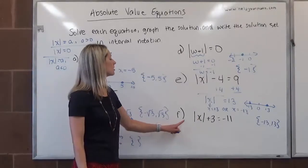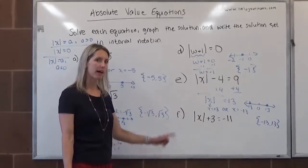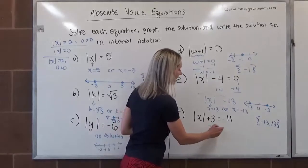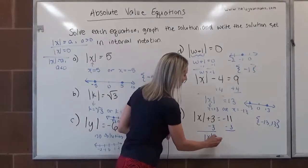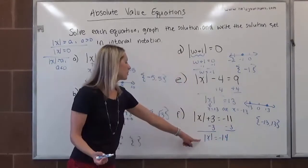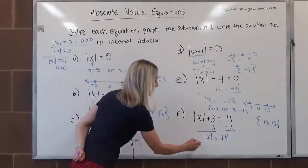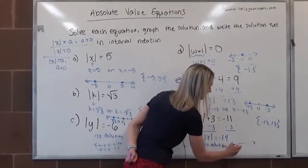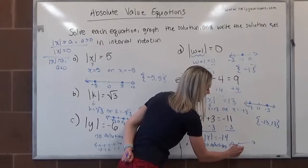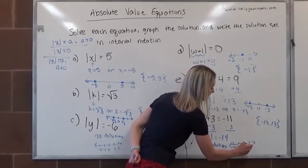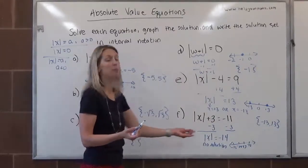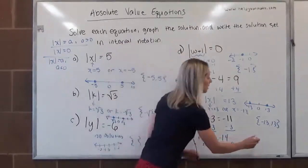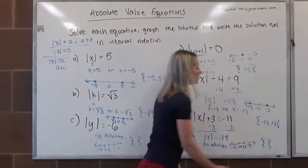Last but not least, letter F. The first thing we need to do is isolate the absolute value — there's a plus 3 outside of it. We subtract 3 from both sides, and now we have the absolute value of x is equal to negative 14. When the absolute value equals something negative, that indicates there is no solution. On a graph, we would just have a number line — for example, negative 15, negative 14, negative 13, negative 12 — with no dots or points on it. In interval notation, we open up a set of braces and put nothing inside.